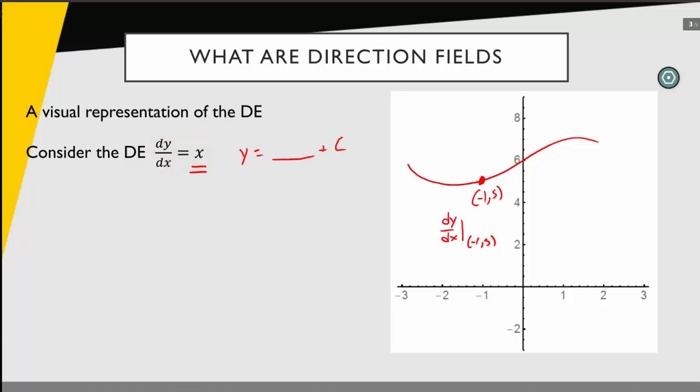What I need to do is calculate the slope of the tangent lines at a sample of points in the plane, then draw little segments of those tangent lines all over the plane, and then interpret the results.